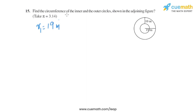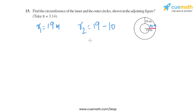The radius of the outer circle, R1, equals 19 meters. The radius of the inner circle, R2, equals the radius of the outer circle (19 meters) minus the thickness (10 meters), so the radius of the inner circle is 9 meters.